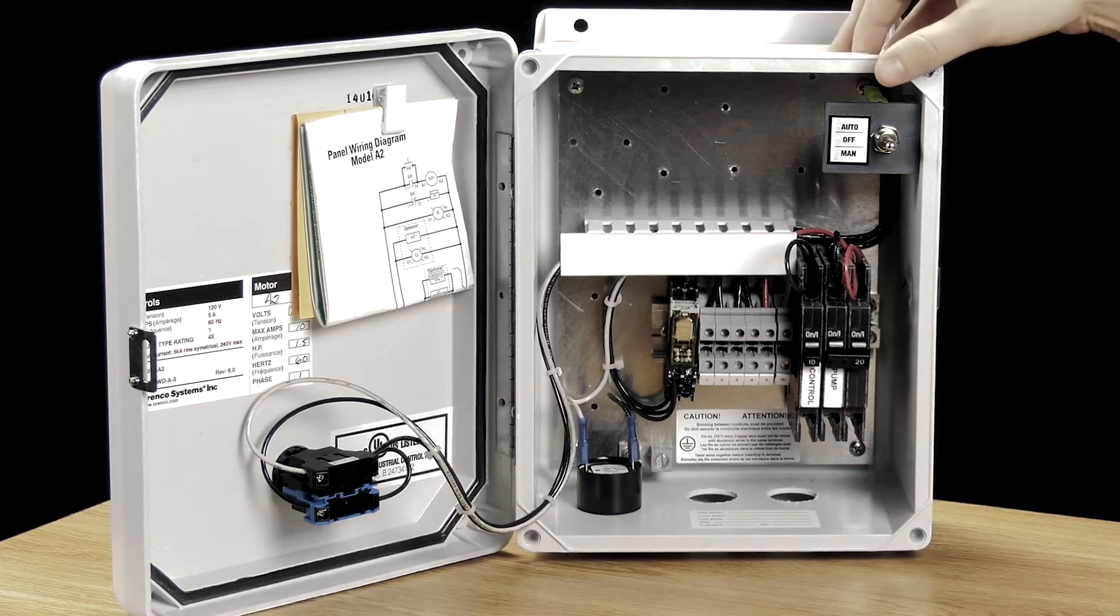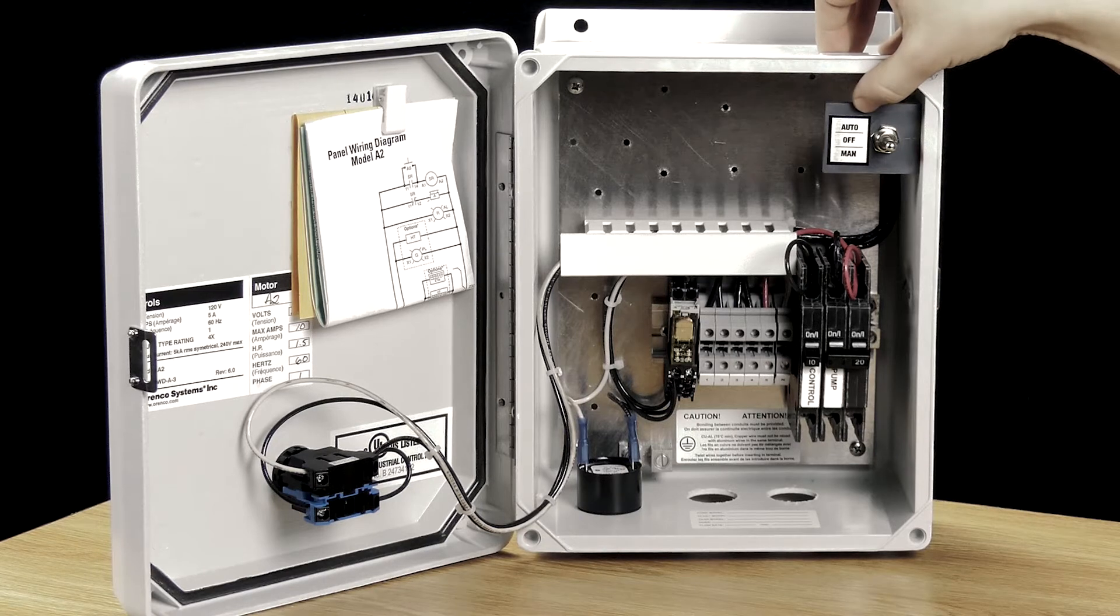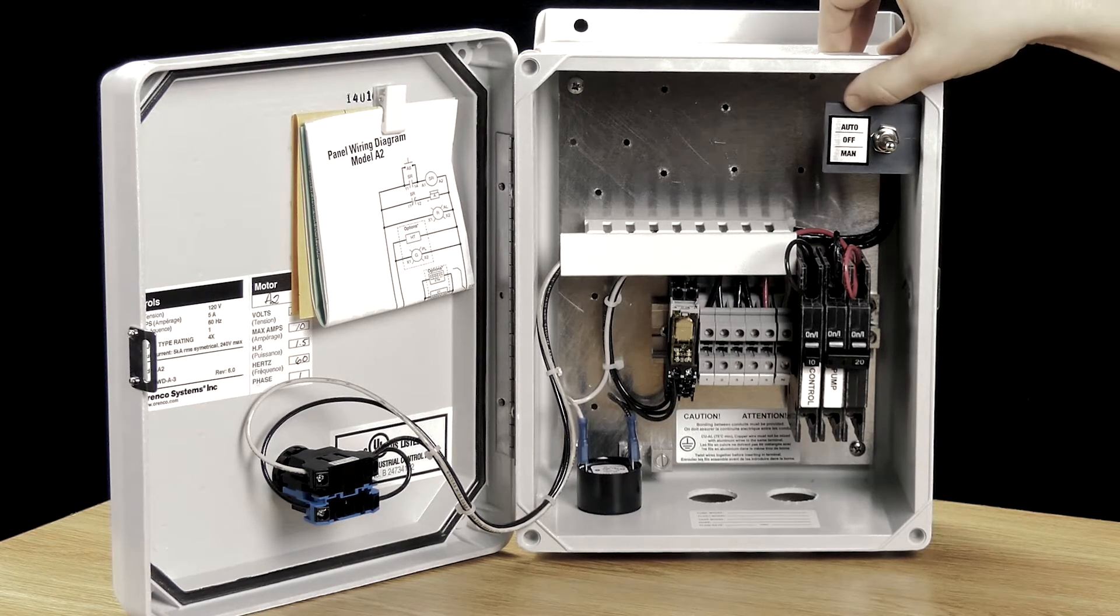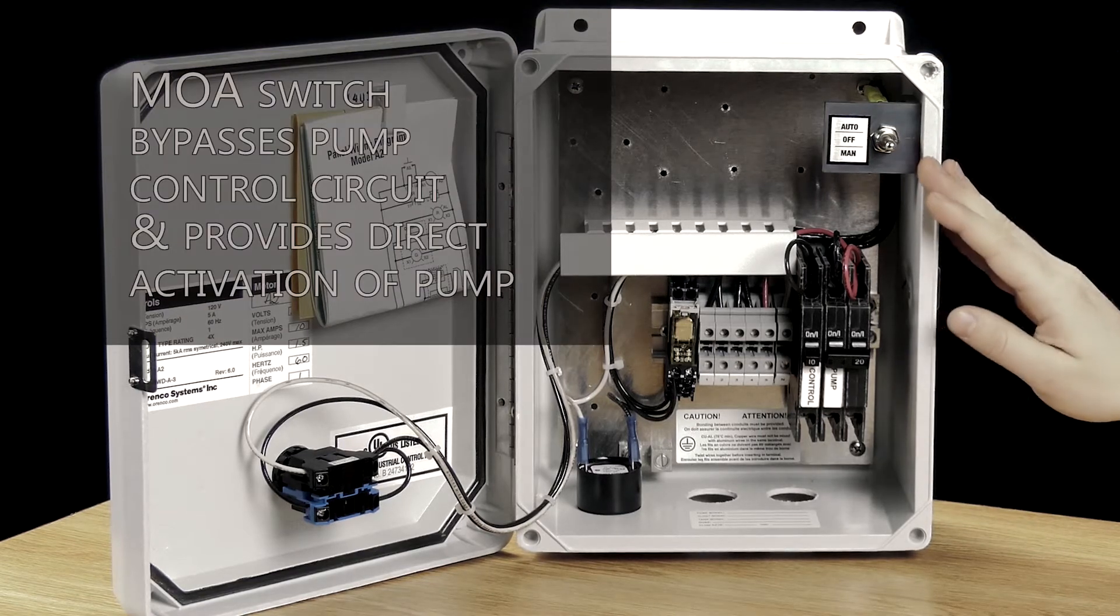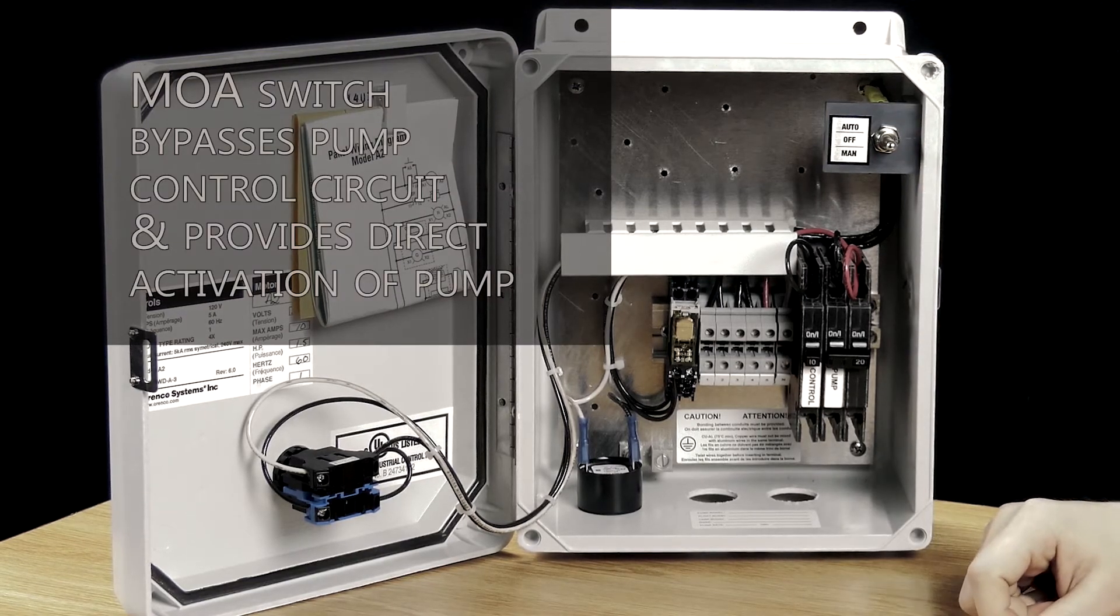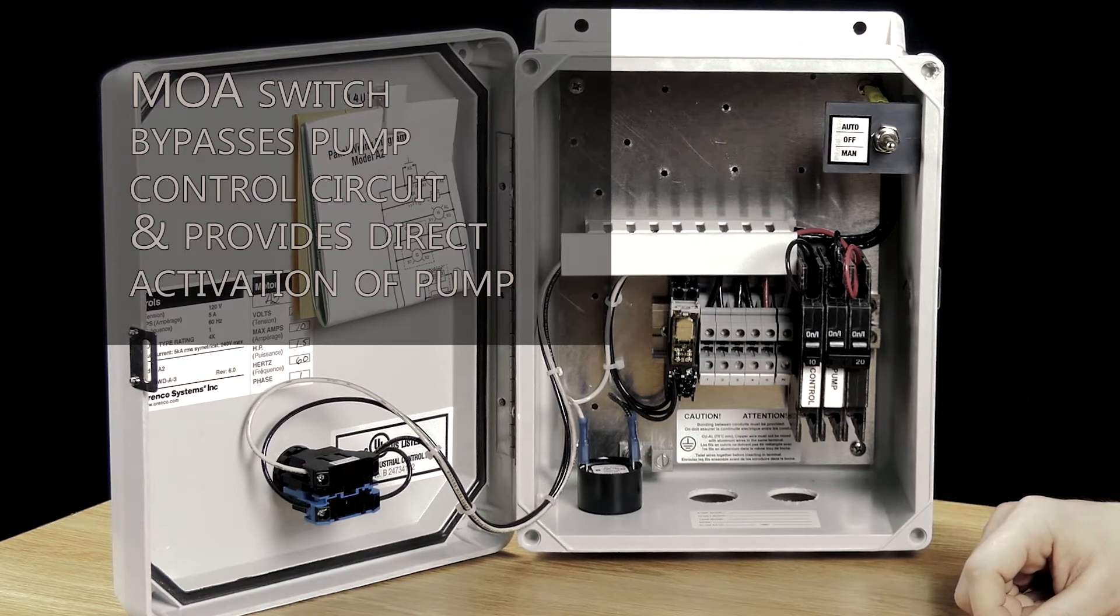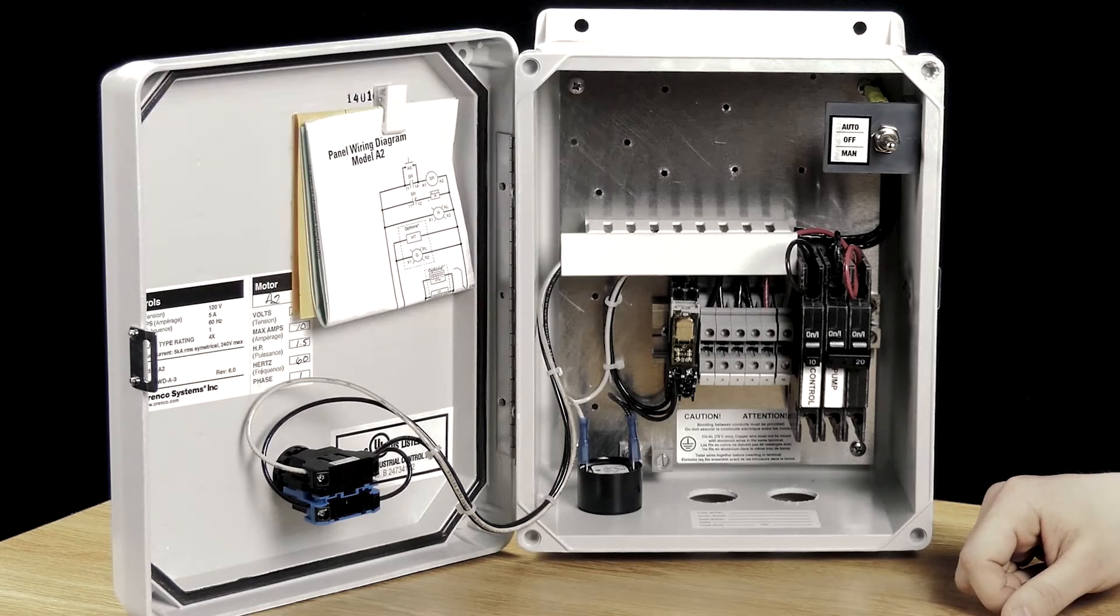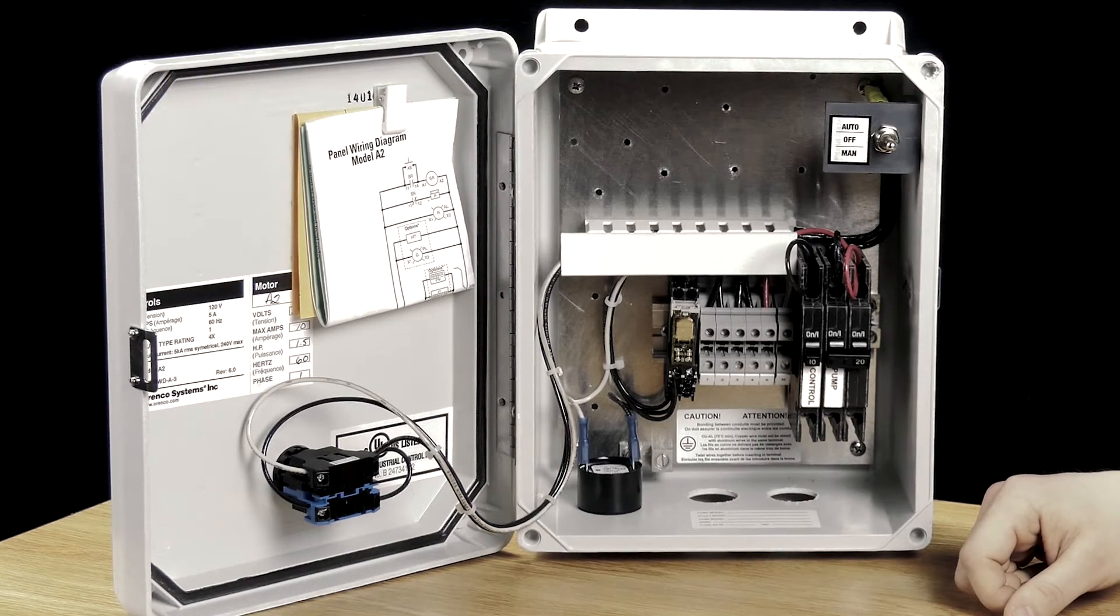Additionally, which is nice, is these panels have the man-off-auto switch, as it's commonly referred to in the industry. This is probably one of the most useful tools when it comes to troubleshooting with a control panel, period. All the stuff internally does work together to ease troubleshooting, and that's kind of the importance of having a panel.